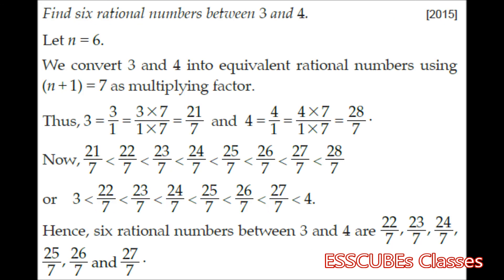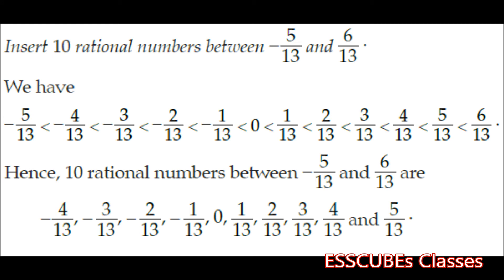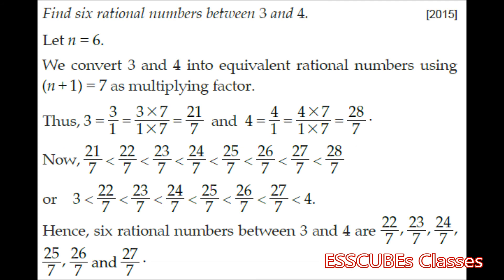We are asked to find 6 rational numbers between 3 and 4. Since 6 rational numbers are to be found, n equals 6, so n plus 1 is 7. We multiply 3 and 4 by 7, getting 21 by 7 and 28 by 7. The 6 rational numbers lying between them are 22 by 7, 23 by 7, 24 by 7, 25 by 7, 26 by 7, and 27 by 7. Just by multiplying by that factor, we have found 6 numbers between 3 and 4.